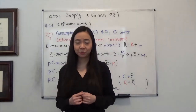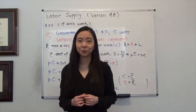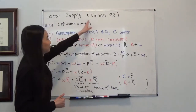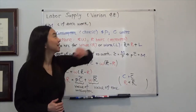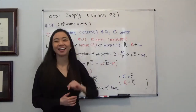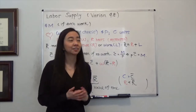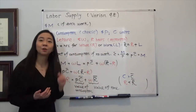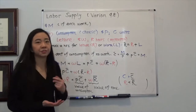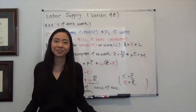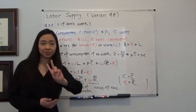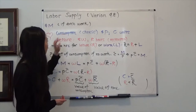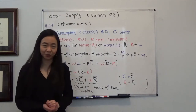Hello everyone, my name is Iris Franz. Today we're going to talk about labor supply, that's from Varian 9.8. Assume that if you don't work, you'll have M dollars — let's say this M dollars is given by your parents. And there are two things you like: one is consumption and the other one is leisure.